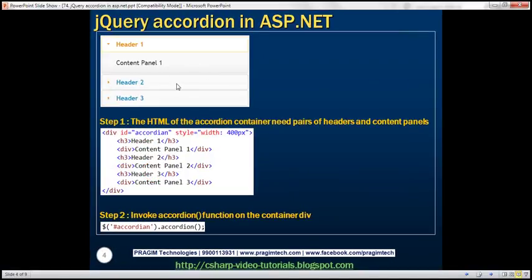To produce this accordion, we just need two simple steps. The first is the HTML for the accordion panel. Notice that we have a container div element with an ID of 'accordion' — you can give it any meaningful ID. For this demo, the width is set to 400 pixels. Inside this accordion container are pairs of headers and content panels: an H3 element for the header and a div element for the associated content panel. Similarly, we repeat this pattern for each header.